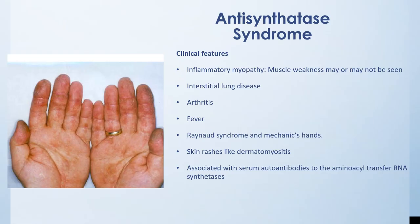Antisynthetase syndrome is an inflammatory myopathy where muscle weakness may or may not be prominent early in the course. Importantly, these patients have interstitial lung disease, arthritis, fever, Raynaud's syndrome, mechanic's hands, and skin rashes similar to dermatomyositis. This presentation is associated with specific serum autoantibodies to aminoacyl-tRNA synthetase enzymes — that's why it's called antisynthetase syndrome.